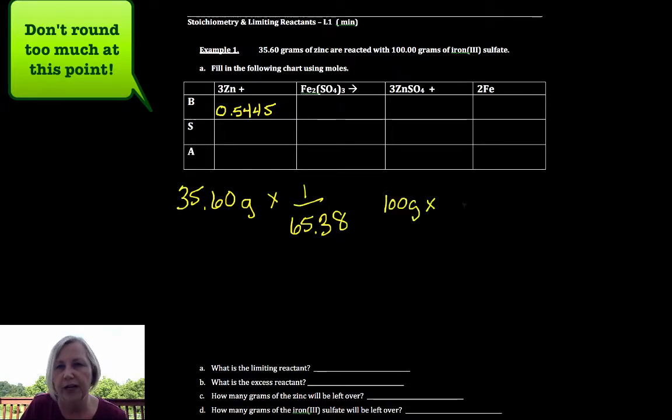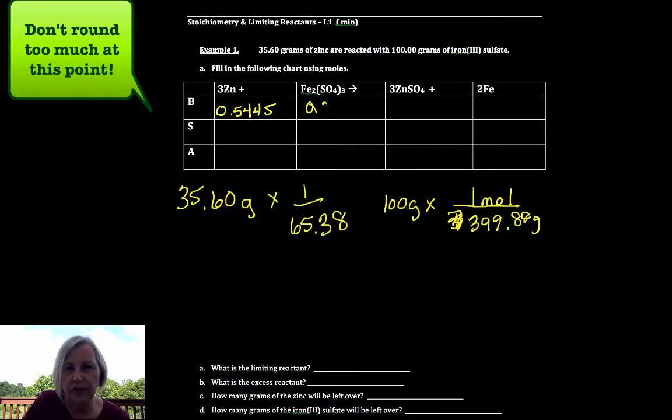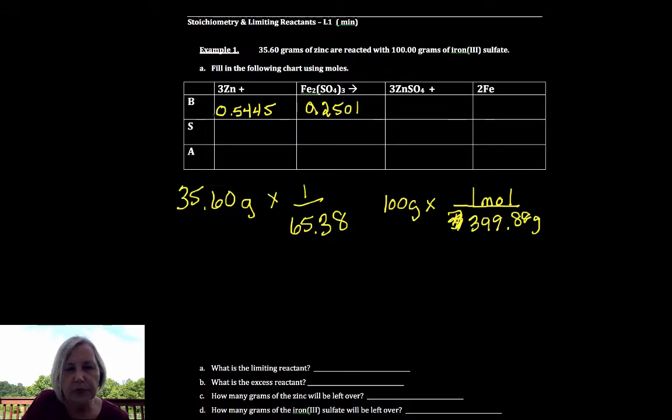We have 100 grams of iron(III) sulfate. And I did a quick Wikipedia search and found that that is 399.88 grams for every one mole. And so I'd have 0.2501 moles. It's really helpful to put zero point. Again, on the AP test, I graded and I could not tell whether the decimal point was there. If you put a zero in front, it really sets that decimal point off.